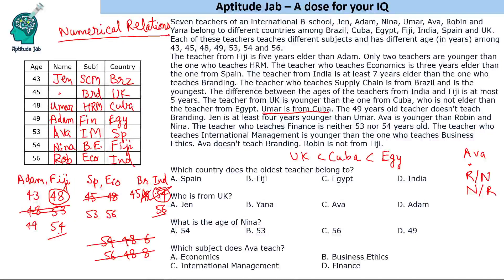There is one person left. The names given are Jen, Adam, Nina, Umar, Ava, Robin, and Yana. The remaining unassigned slot belongs to Yana. This completes the list of people, subjects, and countries — we can now fill the entire table.